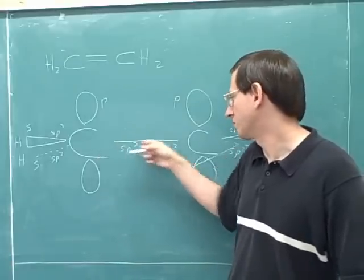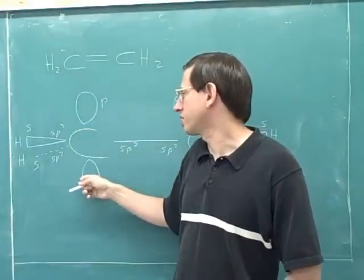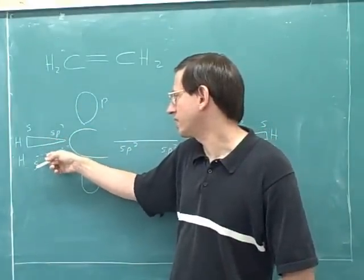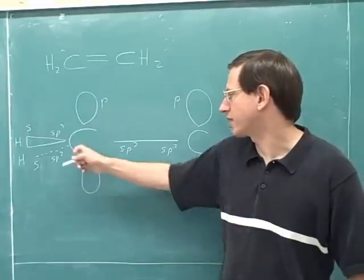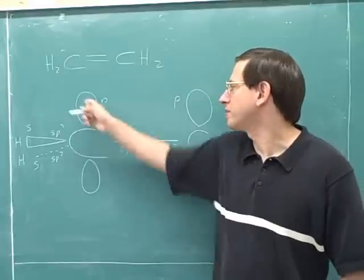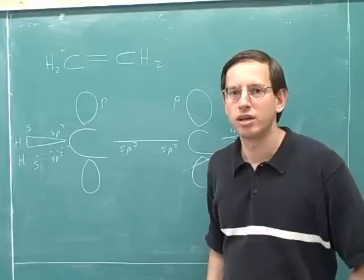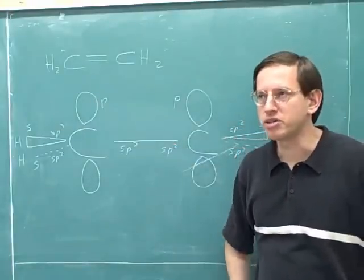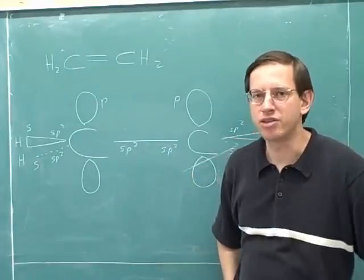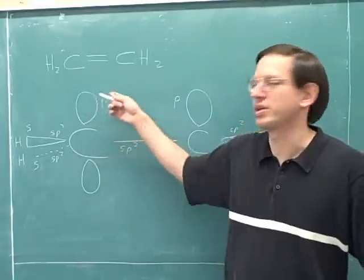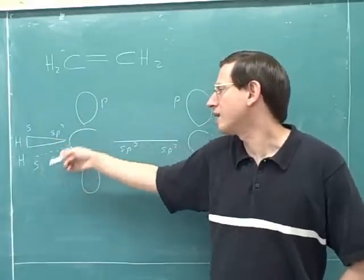These p orbitals are drawn perpendicular to all the sp2 orbitals. For example, this sp2 orbital is going straight in the plane of the page, and this p orbital is perpendicular to it. These p orbitals are also perpendicular to the bonds to hydrogen. You might imagine that p stands for perpendicular, because the p orbitals on an atom are always perpendicular to all the hybridized orbitals, and also perpendicular to any other p orbitals there might be. That's a useful mnemonic even if it's not the real etymology.